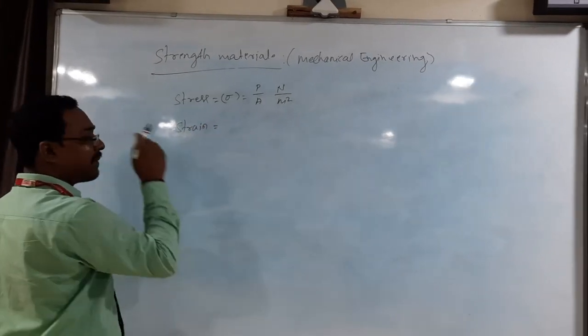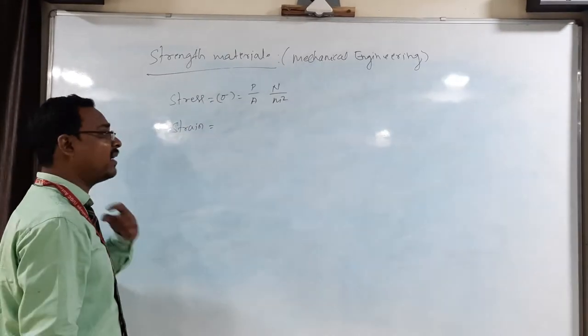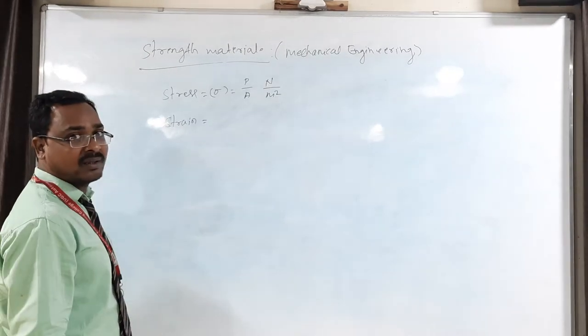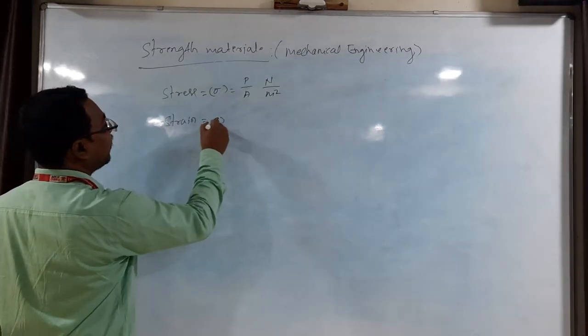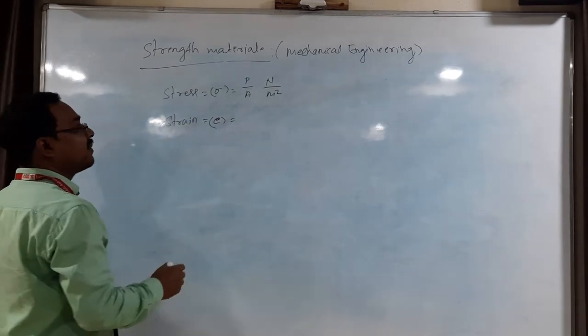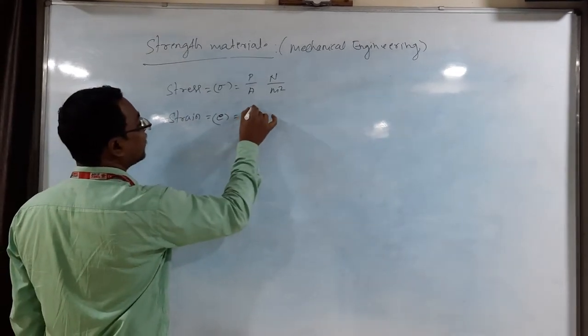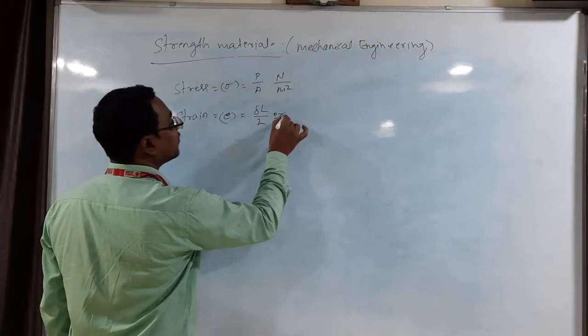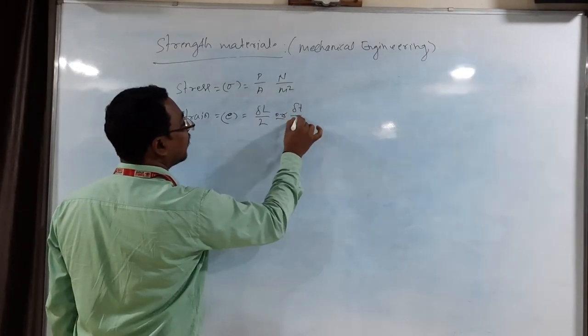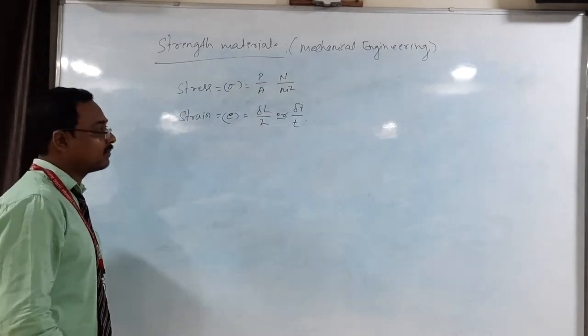Strain. It is nothing but capacity of the material which can withstand the load acting on that matter, how much it can oppose. It is a small e. So, symbol, it is nothing but change in length by original length, or change in thickness by original thickness.